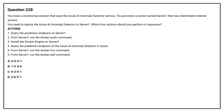Option A: 6, 5, 3, 1. Option B: 1, 5, 3, 6. Option C: 6, 3, 5, 1. Option D: 3, 6, 5, 1. The correct answer is Option D: 3, 6, 5, 1.